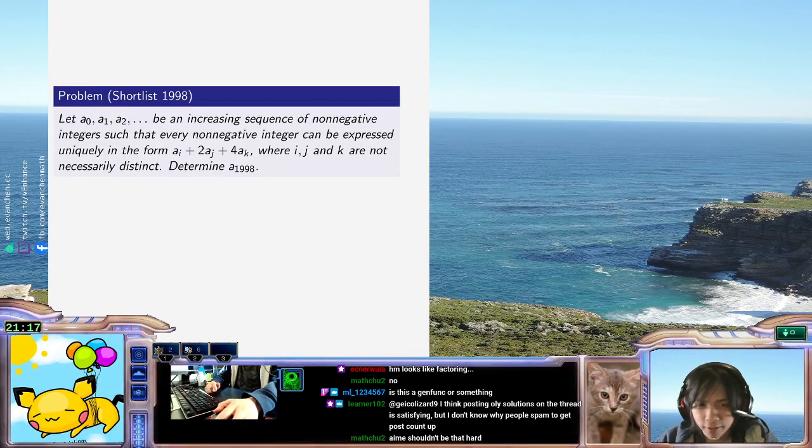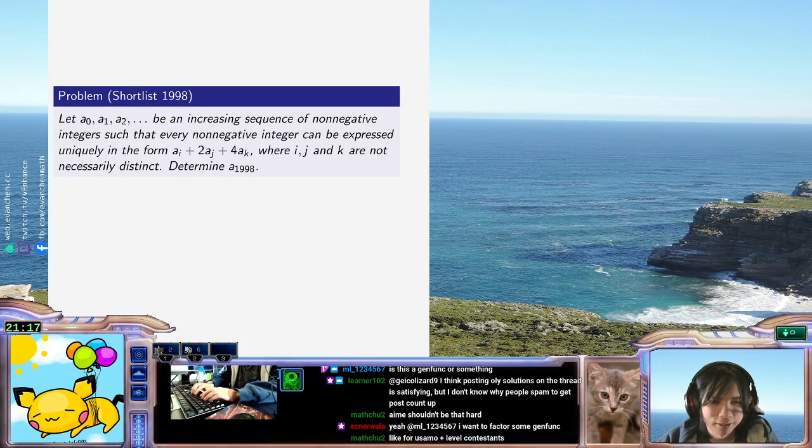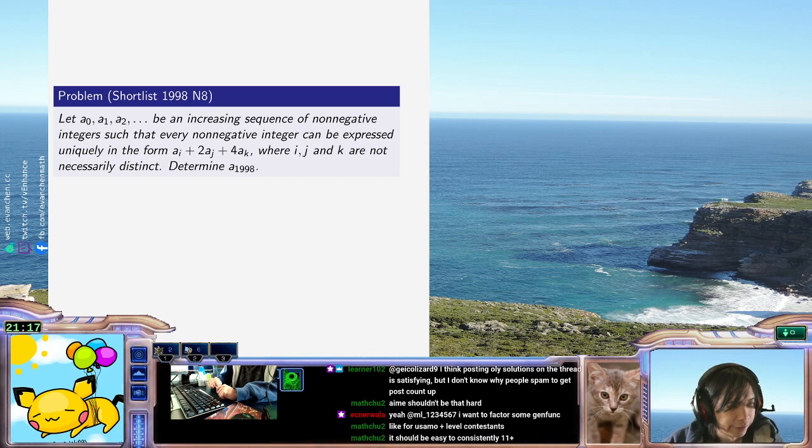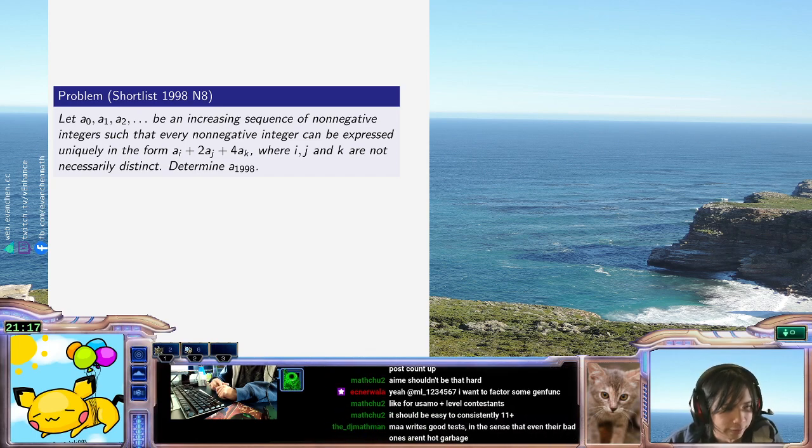Okay, welcome back everyone. So today we have shortlist 1988 N8 which says I have a sequence A0 blah blah of increasing sequence of non-negative integers and every non-negative integer is uniquely of the form like thing plus twice thing plus four thing.